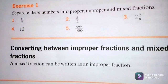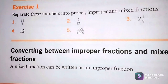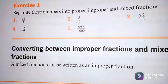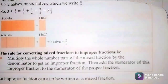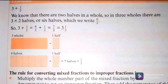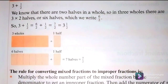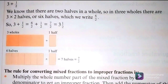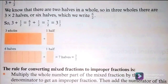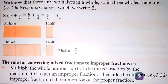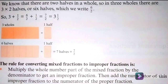We're moving to the next part: converting between improper fractions and mixed fractions. A mixed fraction can be written as an improper fraction. For example: 3 and 1 over 2. We know there are two halves in a whole, so in three wholes there are three times two halves, or six halves. So 3 plus 1 over 2 equals 6 over 2 plus 1 over 2, giving us 7 over 2.